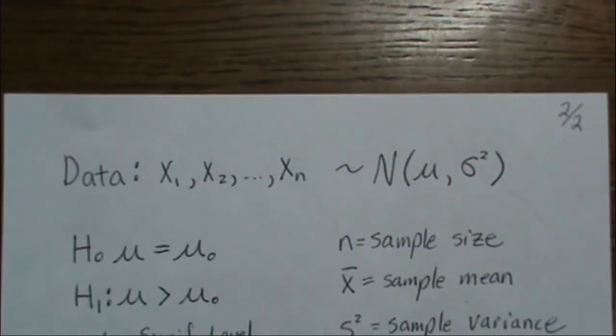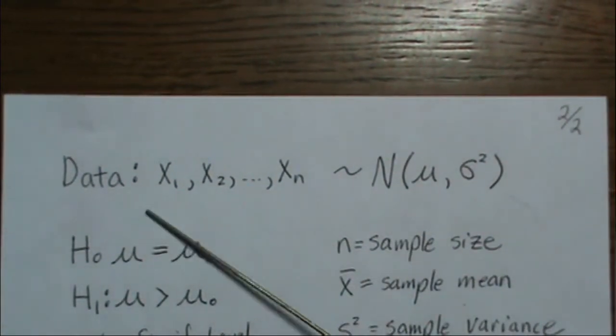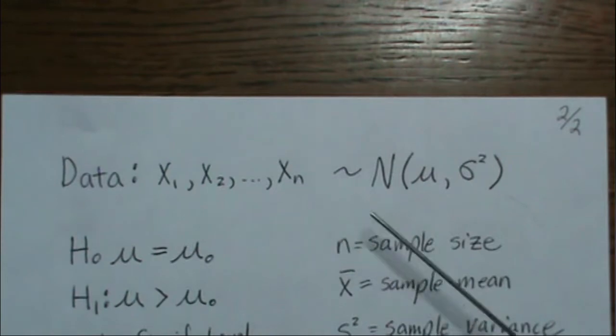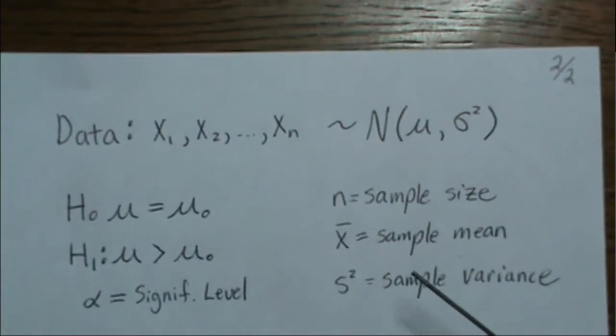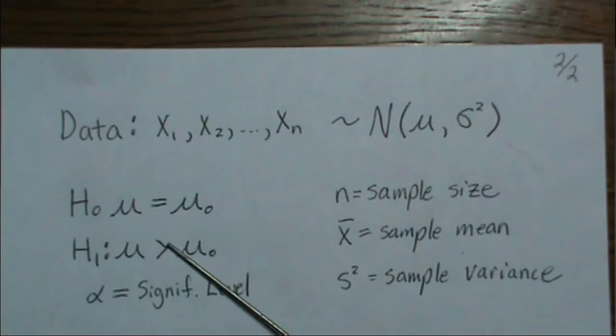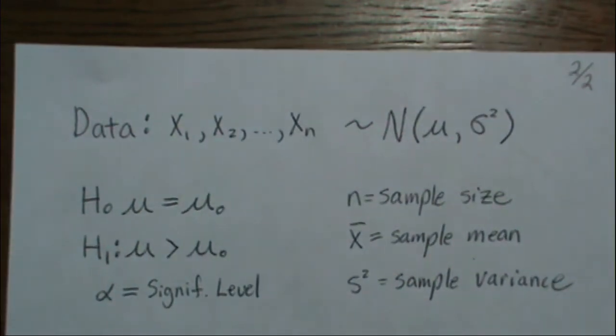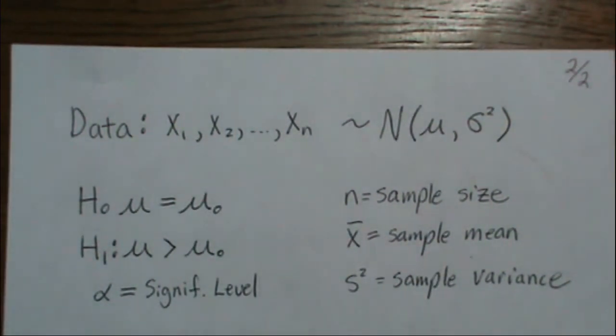To set up our test, our data must follow a normal distribution with some mean μ. Our hypothesis in this case is going to be a one-sided t-test. The null says that our mean equals some value μ₀, and the alternative is that the mean is actually bigger than μ₀. n is the sample size, x̄ is the sample mean, s² is the sample variance, and our significance level is α.